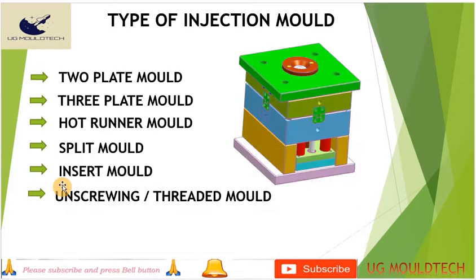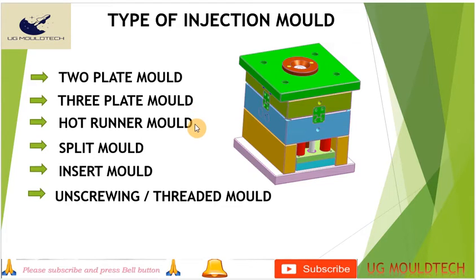Now we move to what are the types of mold we have. There are generally six types of mold: first is the two plate mold, second is the three plate mold, third is the hot runner mold, fourth is the split mold, fifth is the insert mold, and the last is the unscrewing or threaded mold. These are the basic types of mold we have.